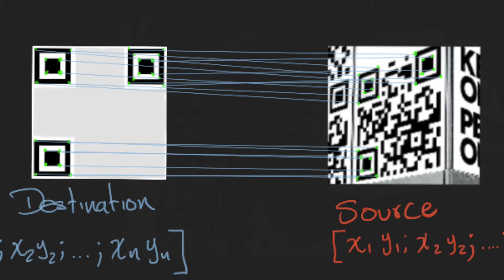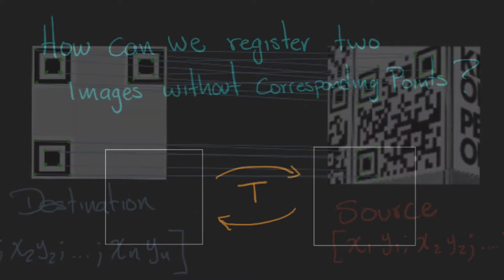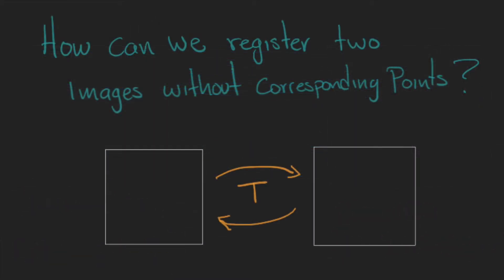However, sometimes we don't have a reliable way to find those points, so we need a method that can use the information in the image to automatically find the best transformation that achieves the objective. This is a common problem in medical imaging.